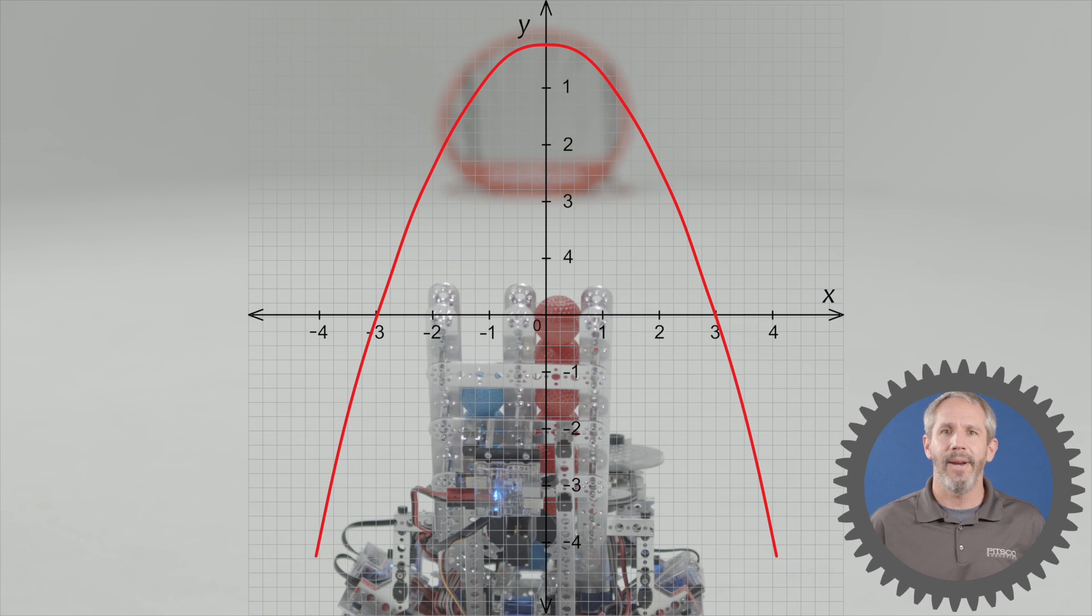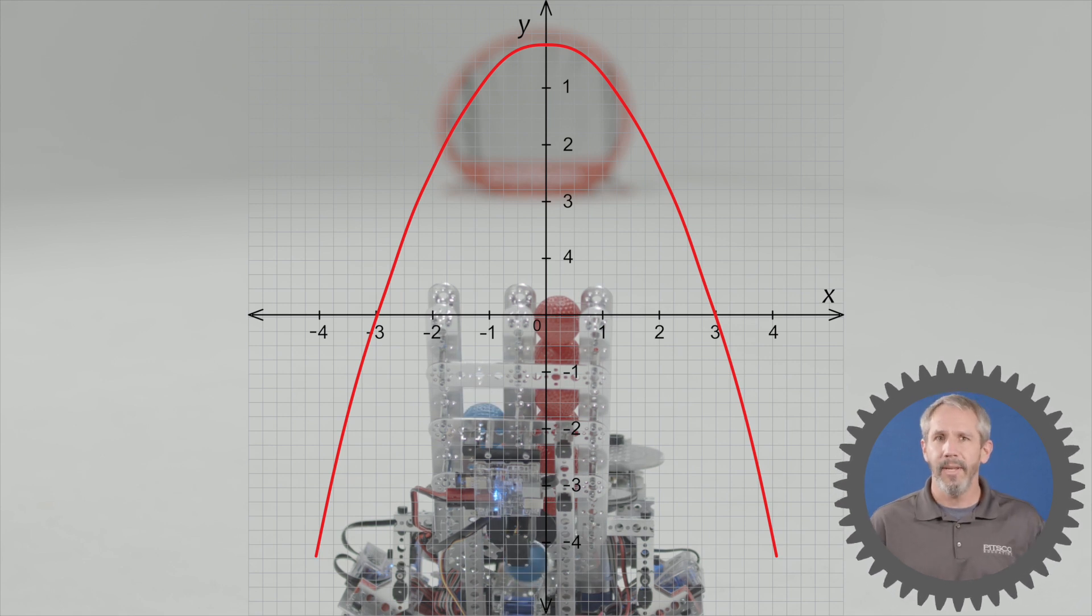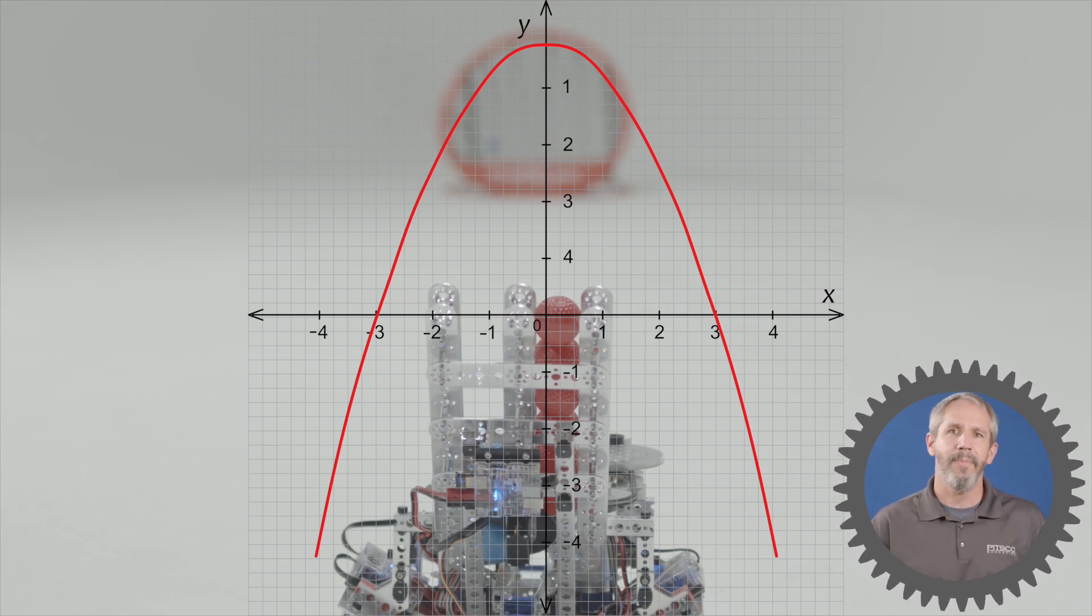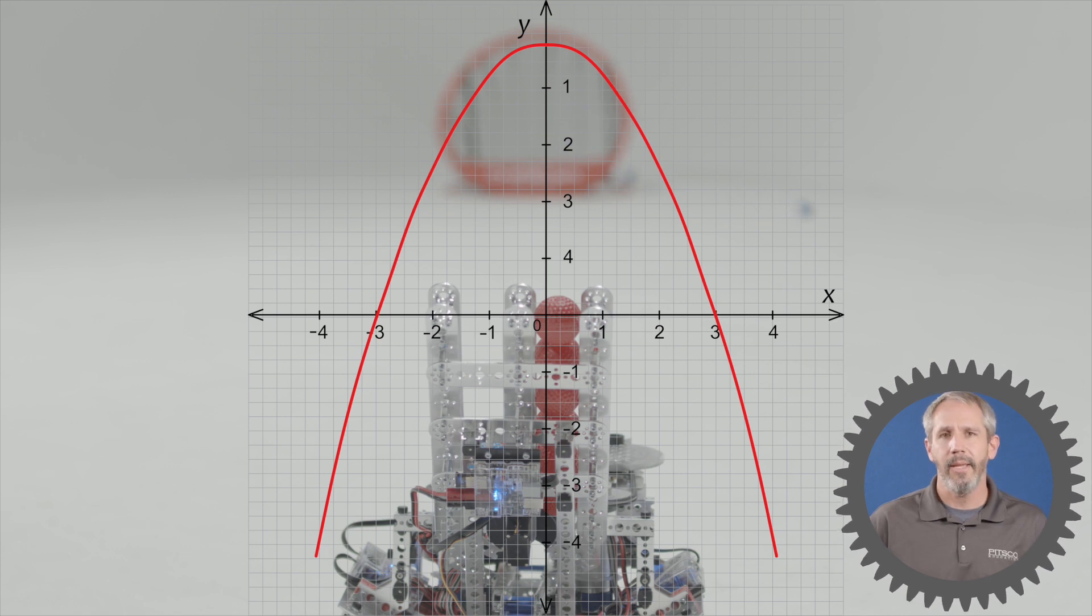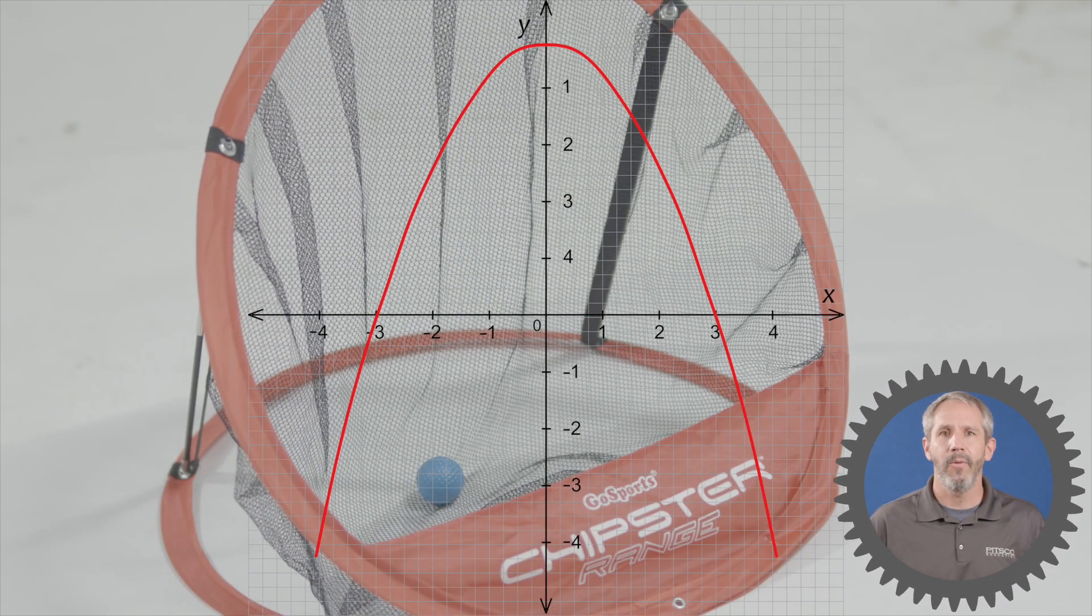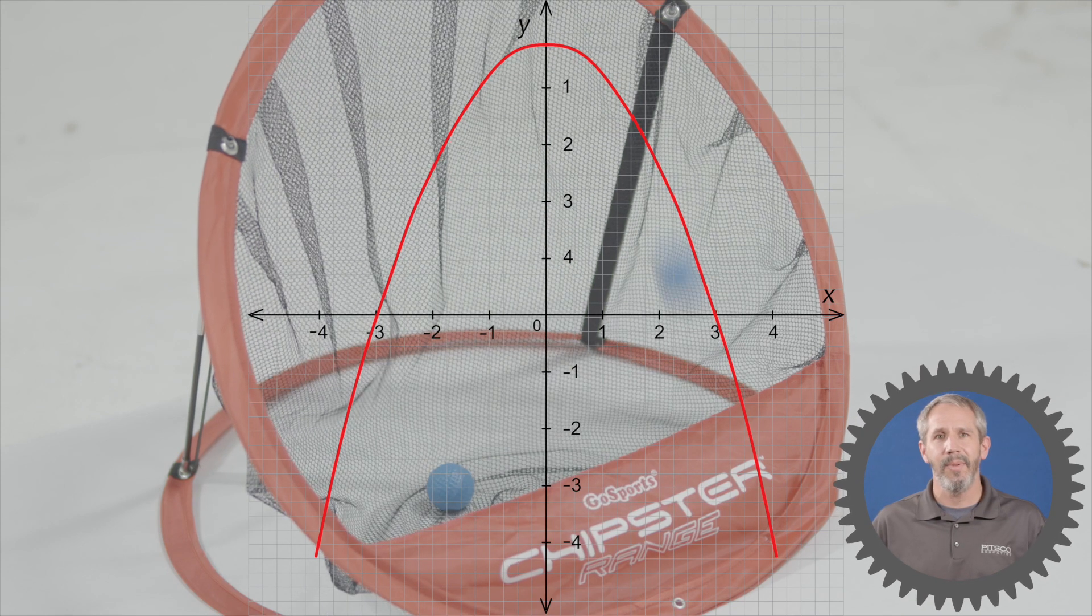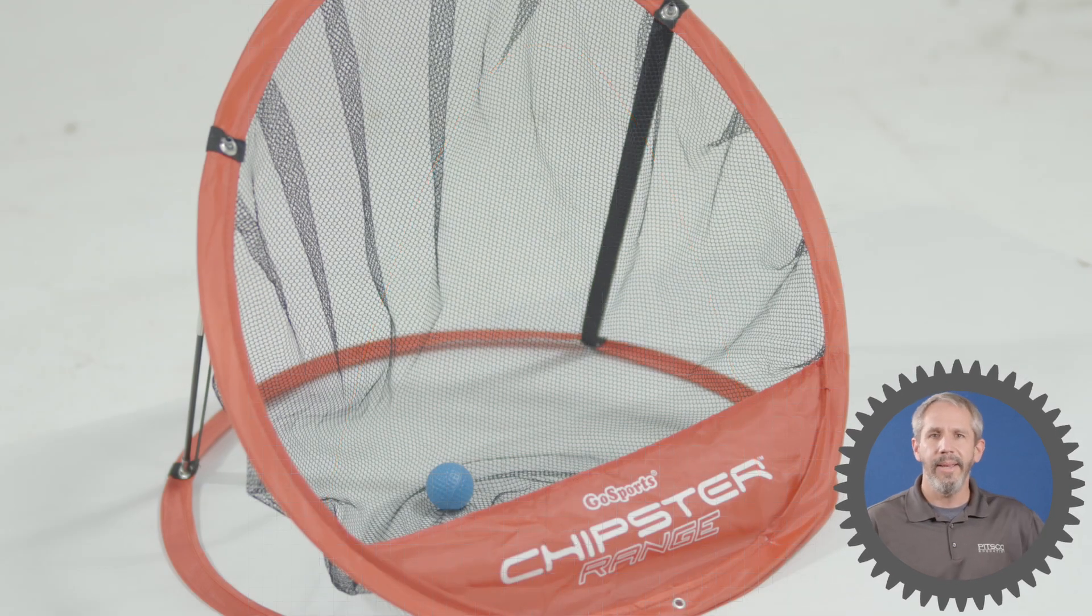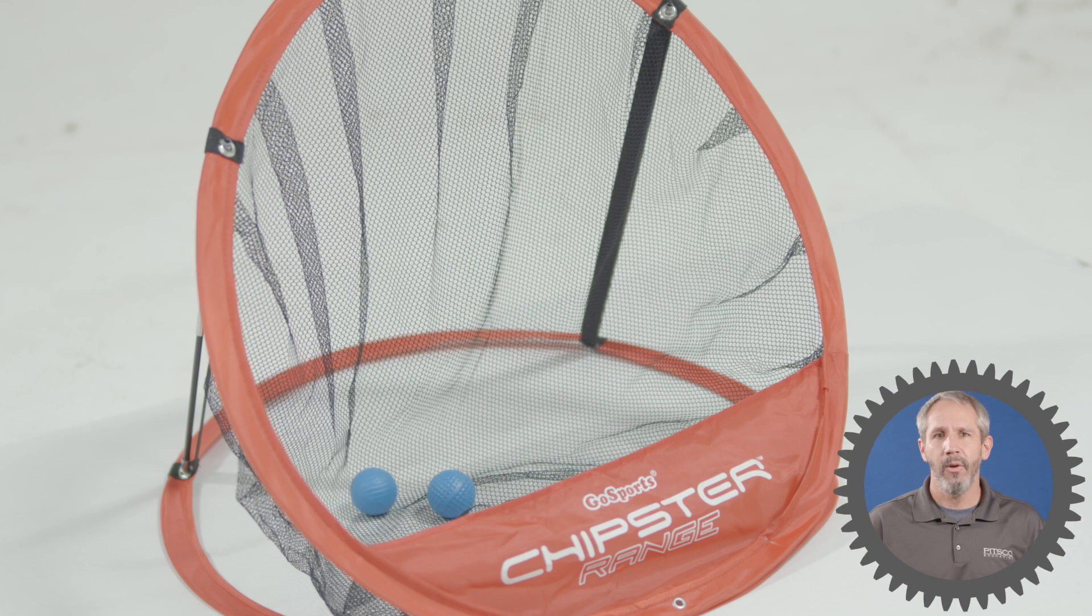Now the cool thing about parabolas is that they're predictable. You can use a branch of mathematics called quadratic equations, which is a part of algebra, to solve specifically for the distance an object needs to be in order to land it in a specific target.